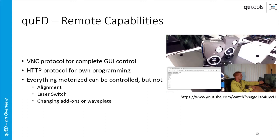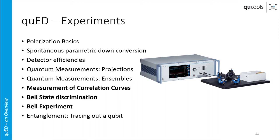I also have a YouTube video on that, so just check out our YouTube channel. Regarding what experiments can be done with the basic setup without the add-ons: basically you can do everything that concerns the polarization of photons and the polarization entanglement of photons. You can do the Bell experiment where you measure a CHSH-type inequality, prepare and measure different Bell states and discriminate between them, and measure the correlation curves for different maximally entangled two-photon states. With additional components like wave plates you can also do tomography.